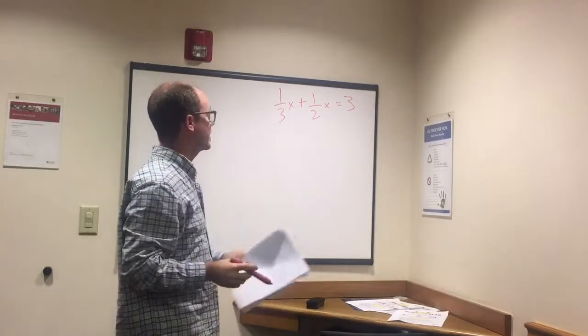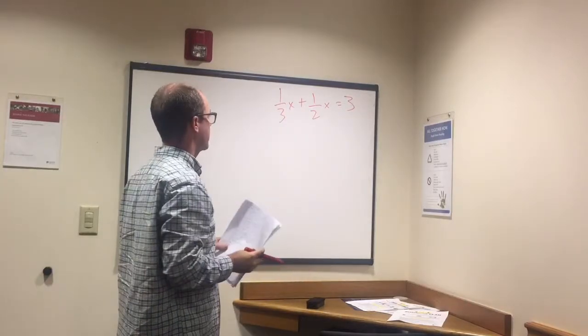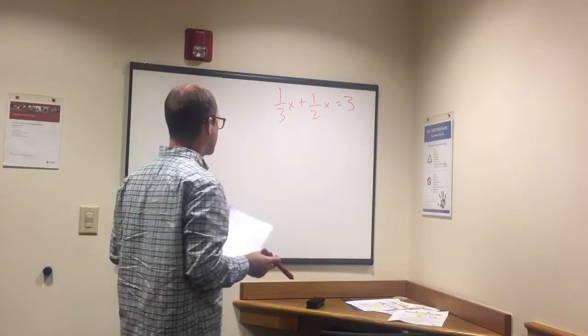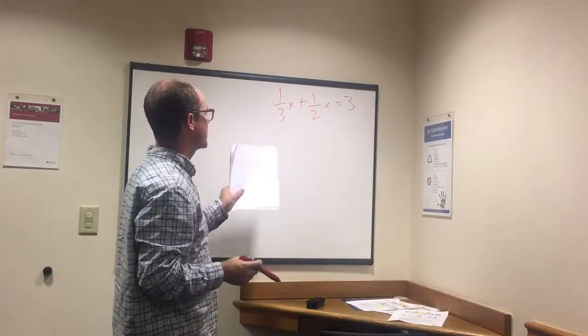Okay, so we're adding, just because there's a variable there, don't let that throw you off. We need to find that common denominator. So the common denominator will be 6.